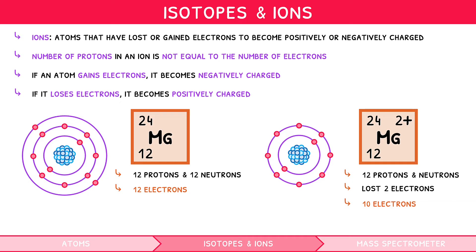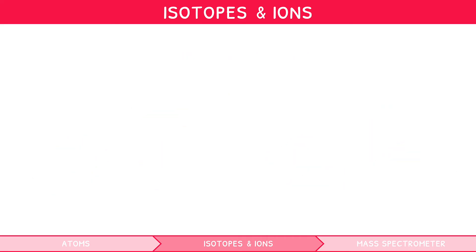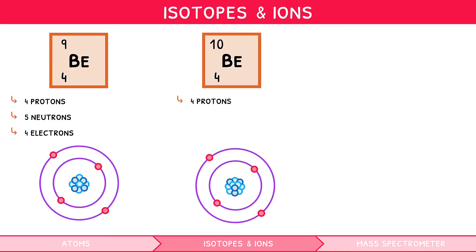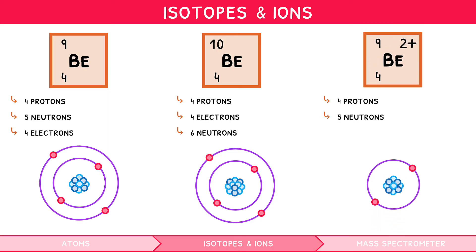Now that you understand the definitions of isotopes and ions, let's quickly look at beryllium as one example to tie them all together. Beryllium-9 has an atomic number of 4 and a mass number of 9, thus it has 4 protons and 5 neutrons. As a neutral atom, it also has 4 electrons. An isotope of beryllium would have the same number of protons and electrons but a different number of neutrons, so beryllium-10 is an isotope with one more neutron. An ion of beryllium would have the same number of protons and neutrons but a different number of electrons, so beryllium-2+ is an ion that has lost 2 electrons.